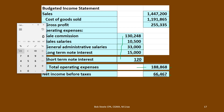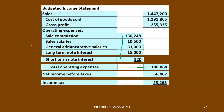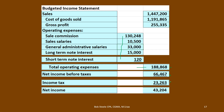We know taxes vary in relation to net income, so we break them out at the bottom. We take the 66,467 and multiply by 0.35 — the 35% tax rate — which gives us income tax expense of 23,263. Then income before taxes minus taxes gives us net income of 43,204.